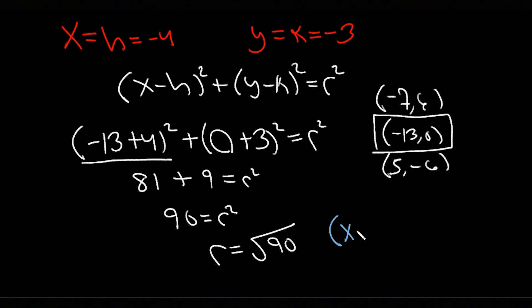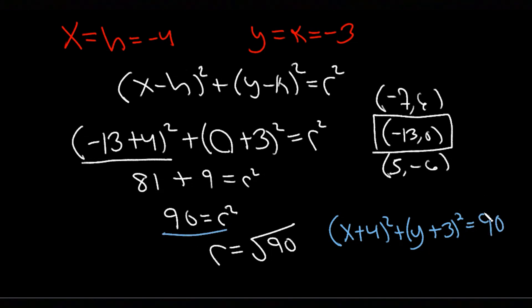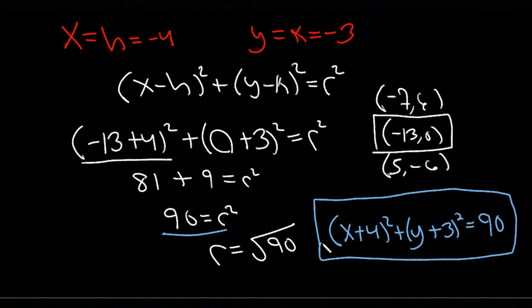We use the positive square root since radius is a distance. Writing the final equation in a different color: (x + 4)² + (y + 3)² = 90. That's the equation of the circle passing through those three points. We used the properties of perpendicular bisectors and solved a 2×2 system of equations. I hope you found it helpful — give it a thumbs up and subscribe for more math videos.